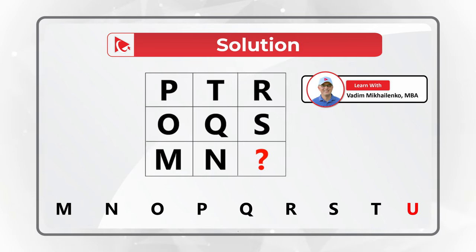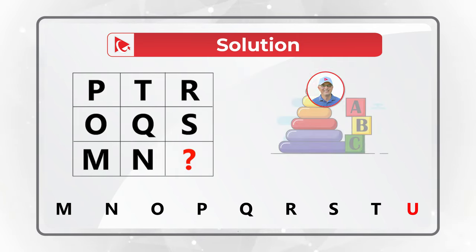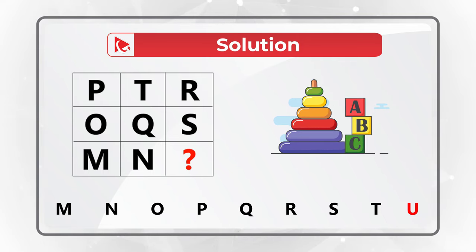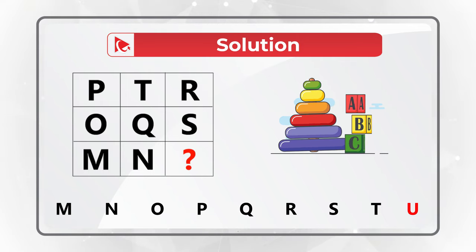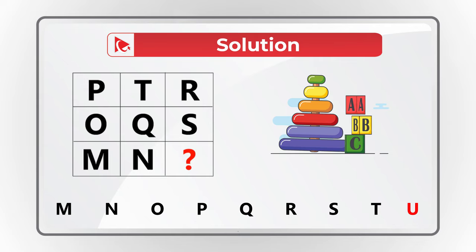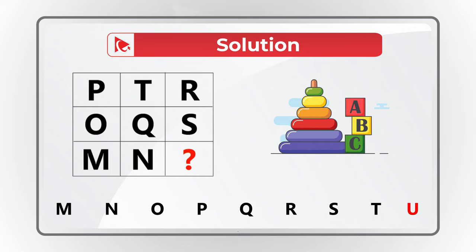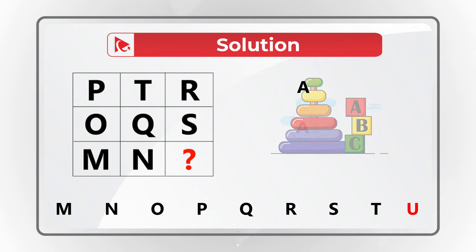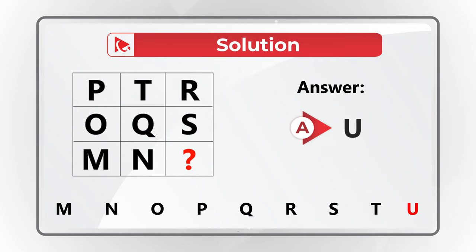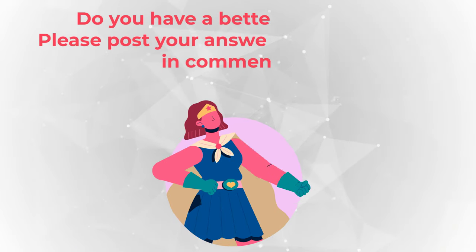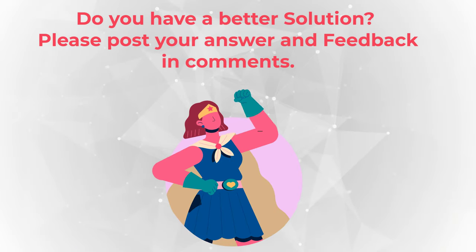So, to answer this question, you need to understand and determine that starting from letter M, all consecutive letters appear in the matrix, and the missing letter in the sequence is letter U. Hopefully you've nailed this question and now know how to answer similar problems on the test.